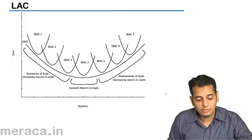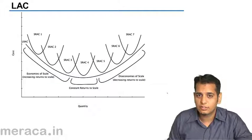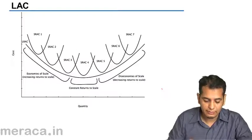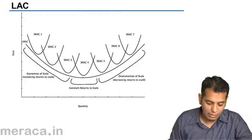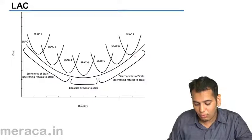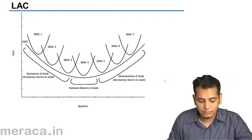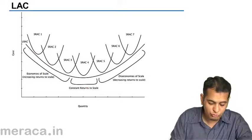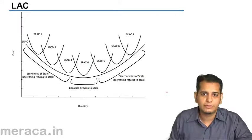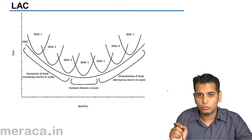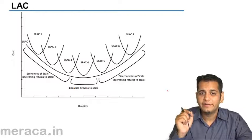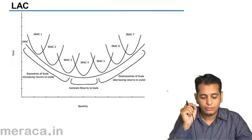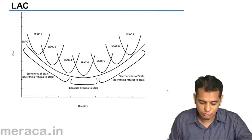In this slide, we'll understand the long run average cost curve in detail. Here we have various short run average cost curves — seven of them actually. And in the same fashion, we've drawn the long run average cost curve. We've not shown the tangency here for a better presentation, but please note that the long run average cost curve is always tangent to all the short run average cost curves.